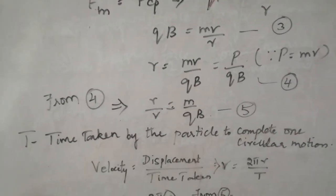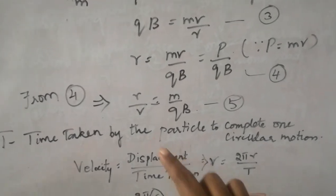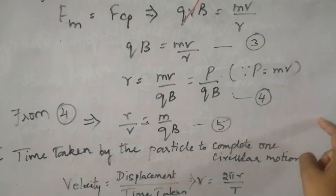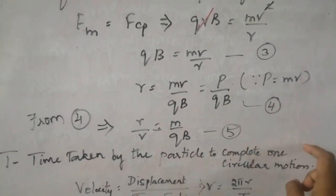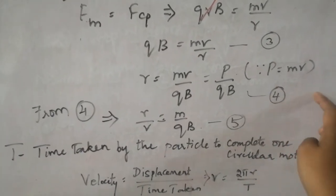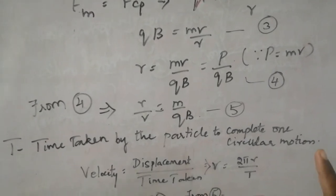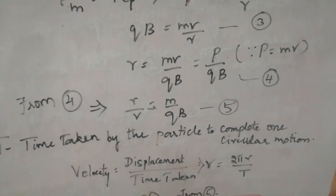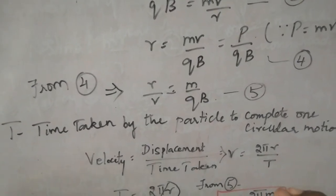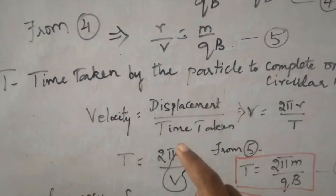Next, what you are going to calculate is time taken by the particle to complete one circular motion. So as I have already told you, for one circular motion, the distance or displacement travelled by the particle is one outer circle distance, that is circumference of the circle. So displacement is circumference of the circle, T be the time taken, V be the velocity. We know the formula, velocity is equal to displacement by time.